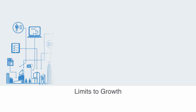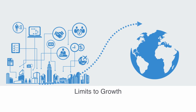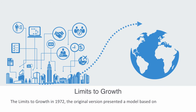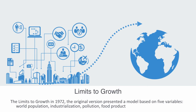This goes some way to describing the basic physical mechanisms of the sustainability dynamic. The variables outlined loosely correlate to those used in the first macro model of global sustainability, published in a book called The Limits to Growth in 1972. The original version presented a model based on five variables: world population, industrialization, pollution, food production, and resource depletion.